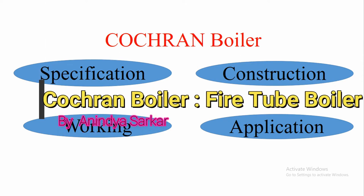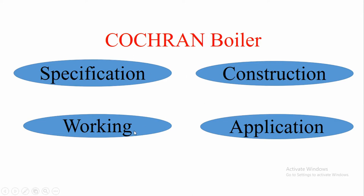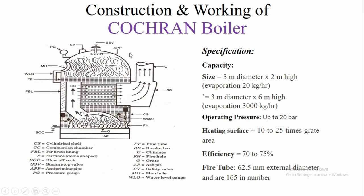In this video we are going to learn about the Cochran boiler: its specification, construction, working, and application. The Cochran boiler has a size of 3 meter diameter by 2 meter height, with an evaporation of 20 kg per hour. If the size is 3 meter diameter by 6 meter height, then the capacity varies accordingly.